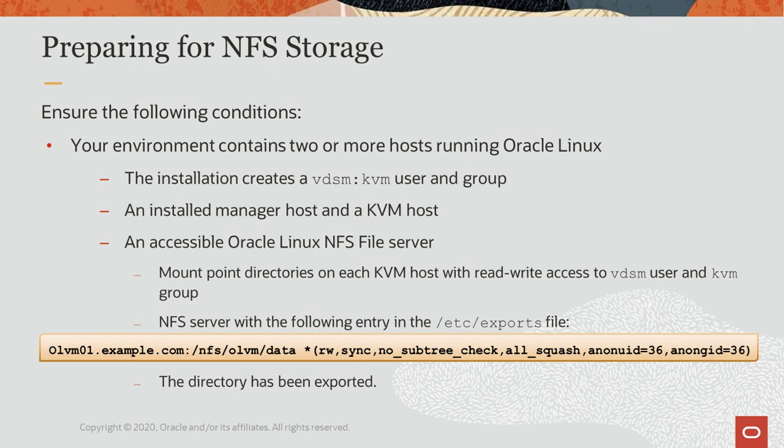Before creating an NFS storage domain, both the KVM host and the NFS server must be configured. On the KVM host, verify that its installation created the VDSM user in the /etc/password file. The VDSM user has a user ID of 36. In the /etc/group file, ensure the KVM group exists with the group ID of 36. The NFS server needs to be accessible to both the manager and the KVM hosts. The storage domain needs a place to store its resources, so you need to create a directory on the NFS server. This directory needs to be owned by the VDSM user and KVM group.